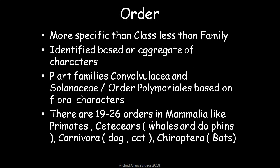Order is more specific than class and less specific than family, identified on the basis of aggregate of characters. For example, the plant family Solanaceae belongs to order Polemoniales, based on floral characters. There are 19 orders in Mammalia, like Primates, Cetacea for whales and dolphins, Carnivora, and Chiroptera for bats. Order has certain families under it.